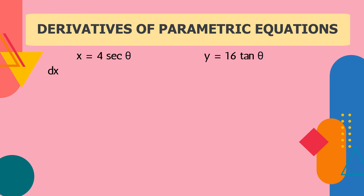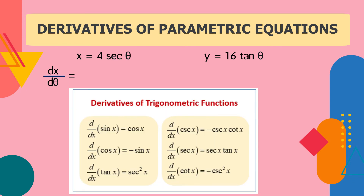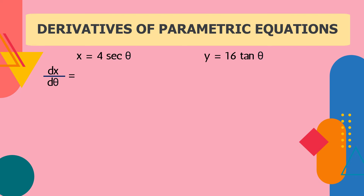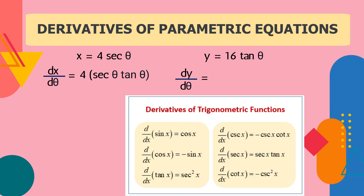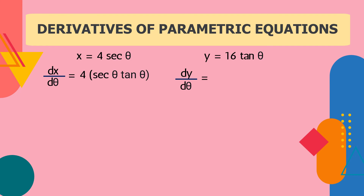Another example: x = 4 sec(θ) and y = 16 tan(θ). We're going to get the derivative of x with respect to θ. Please refer to the trigonometric functions and their derivative chart. The derivative of sec(θ) is sec(θ)tan(θ), so the derivative of 4 sec(θ) is 4 sec(θ)tan(θ). For y: the derivative of tan(θ) is sec²(θ), so the derivative of 16 tan(θ) is 16 sec²(θ).